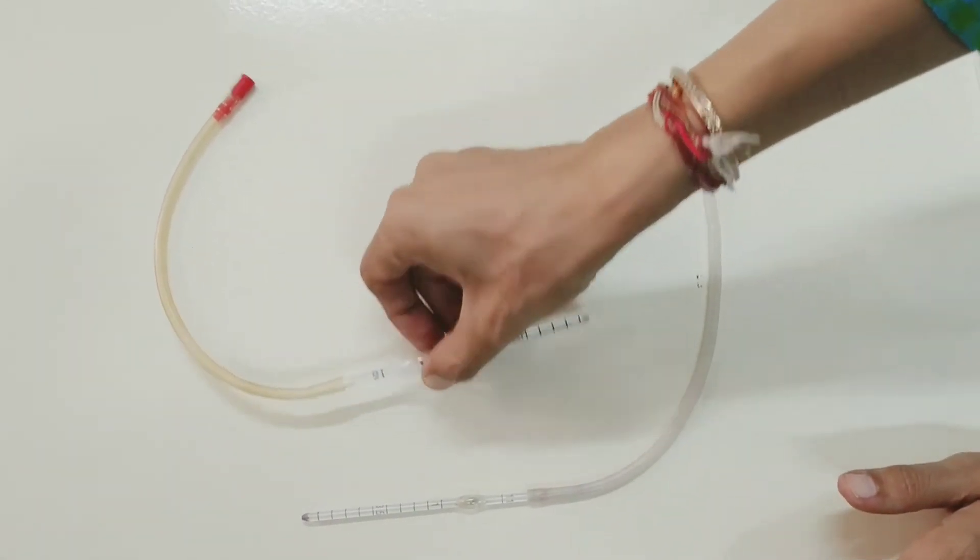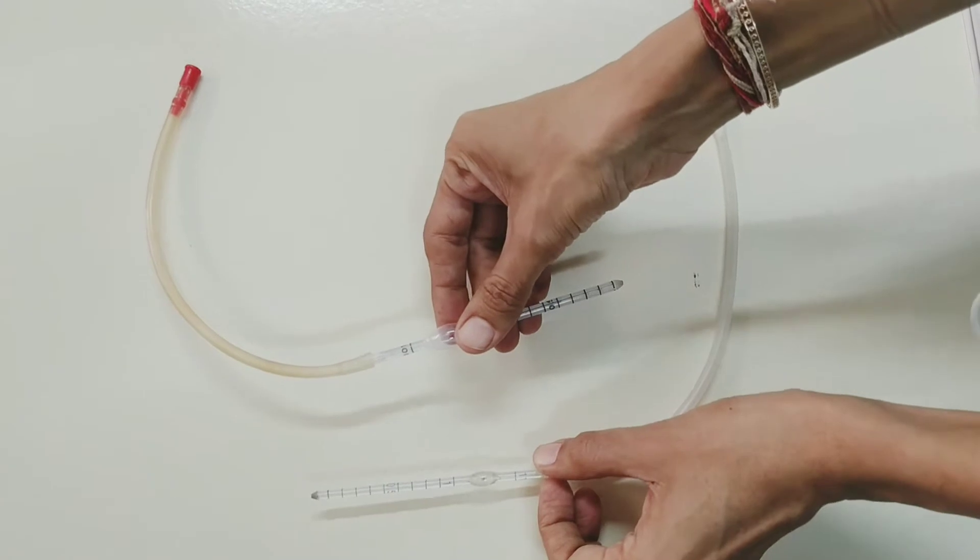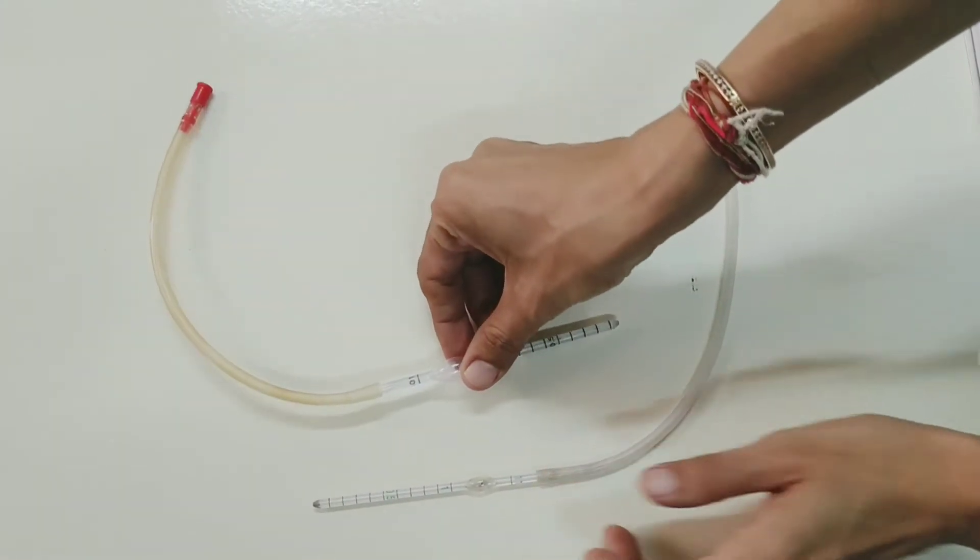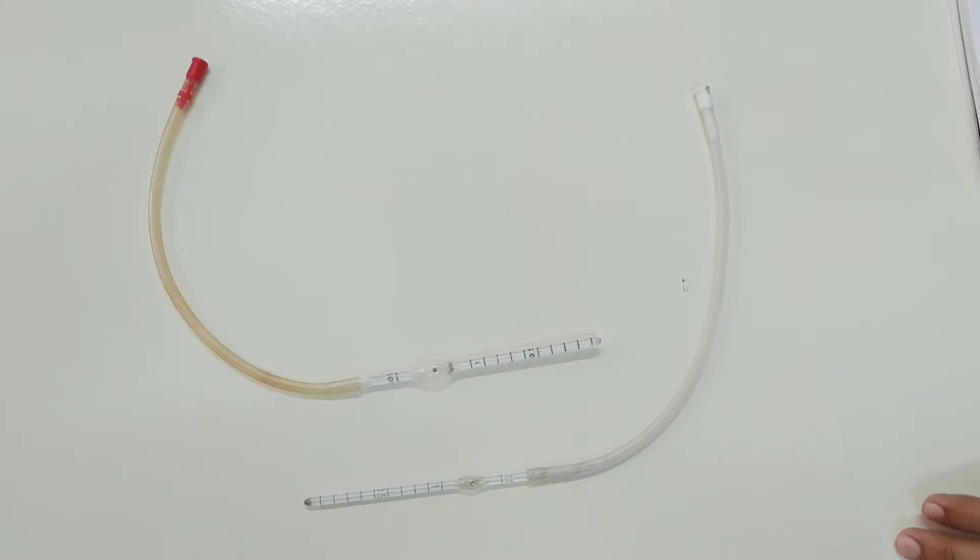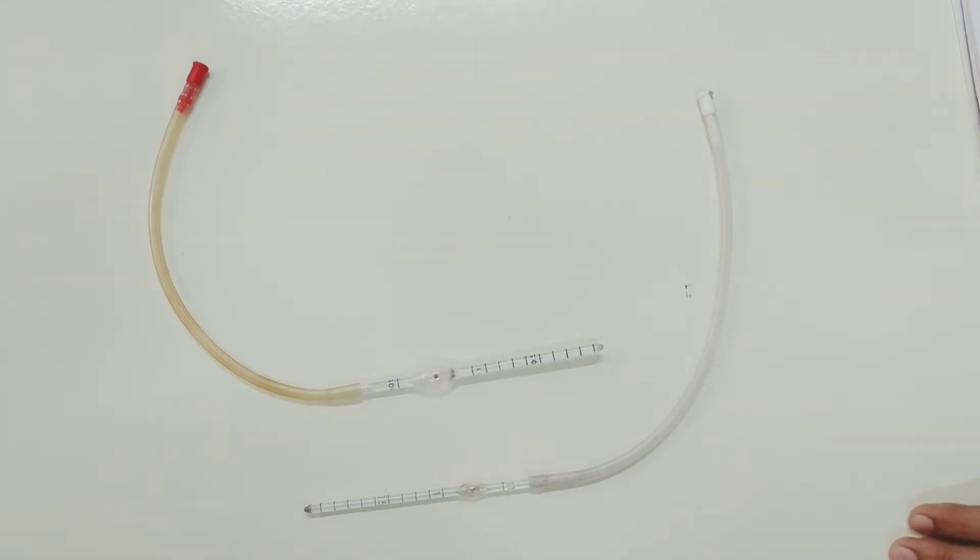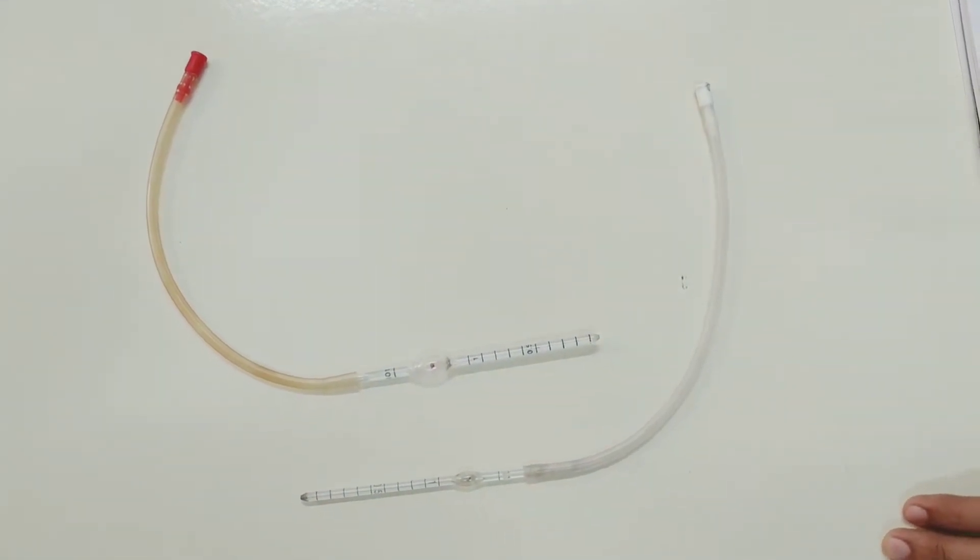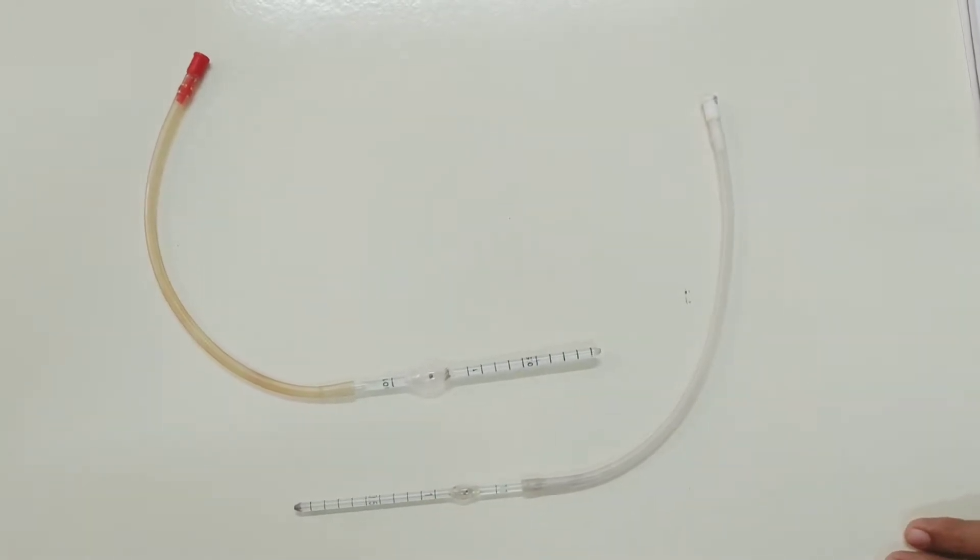This is an RBC pipette and this is a WBC pipette. These are two glass capillary pipettes used for dilution of blood. The pipette is used to dilute the blood with suitable fluid in an accurate known proportion.